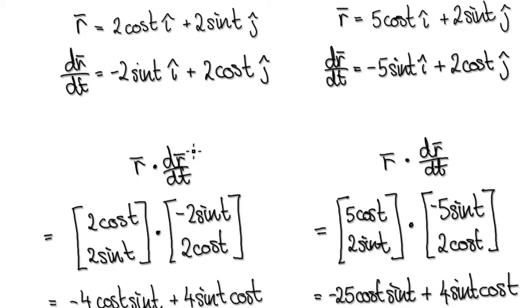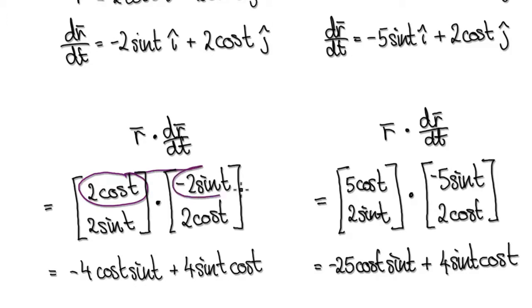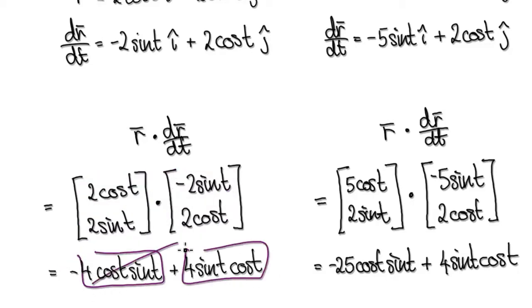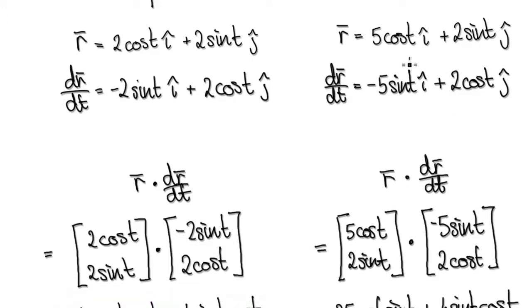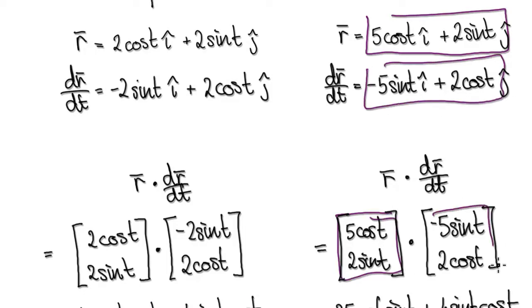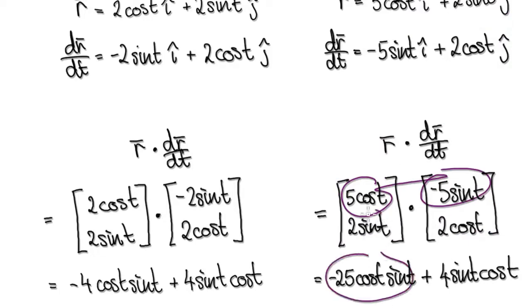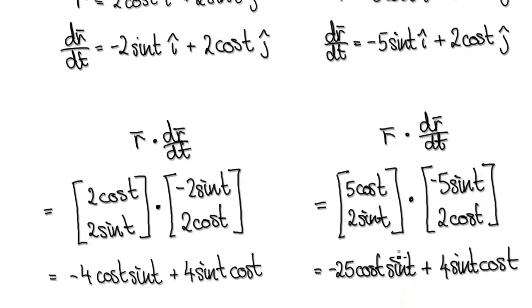The dot product is this component times this plus this component times this, and the two will cancel each other out, always giving zero. That's why the two vectors are always at 90 degrees for a circle. Whereas if you look at the ellipse, the dot product will be this times this plus this times this, giving a result that doesn't always equal zero — sometimes it equals zero at π/2 or π, but not all the time.